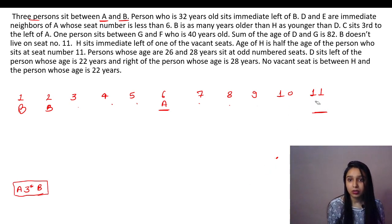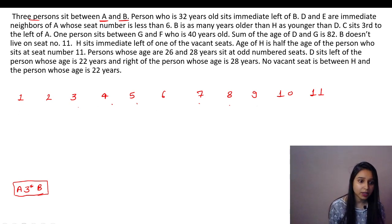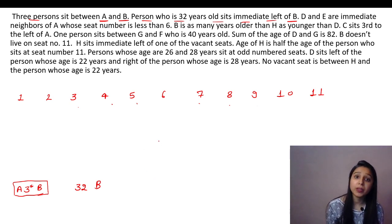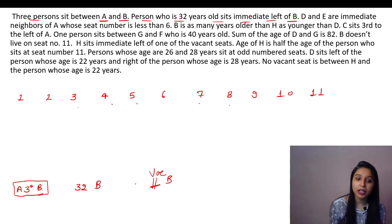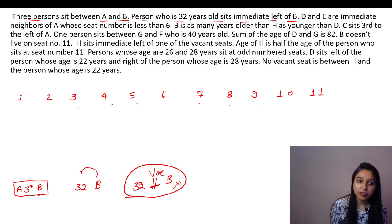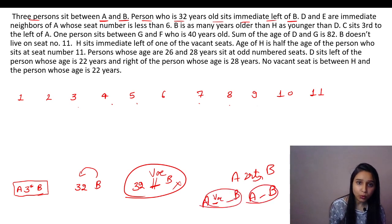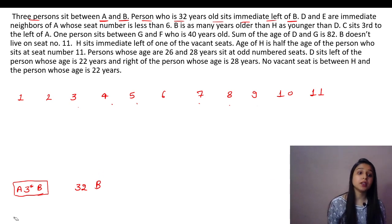Next clue: 'The person who is 32 years old sits immediate left of B.' So 32-year-old person is placed immediately to the left of B. Note: the note about vacant seats applies only when counting persons between two people — not for 'immediate left/right' or 'second right' type clues. Don't over-apply the note to other clue types.